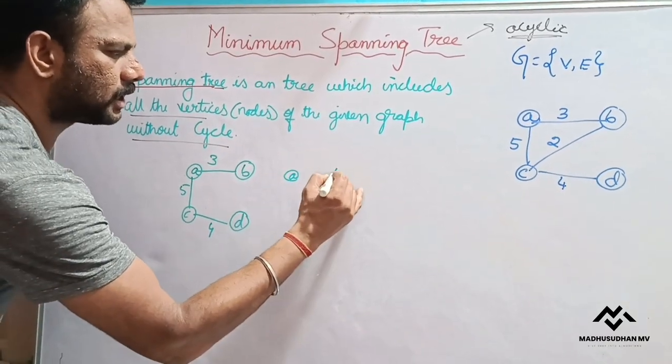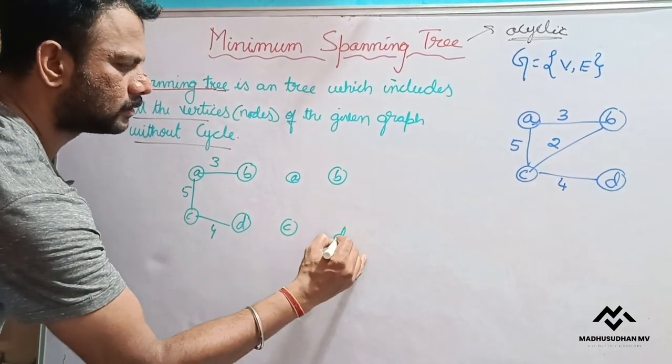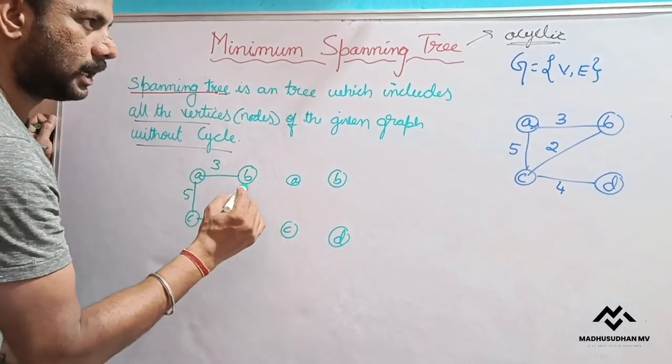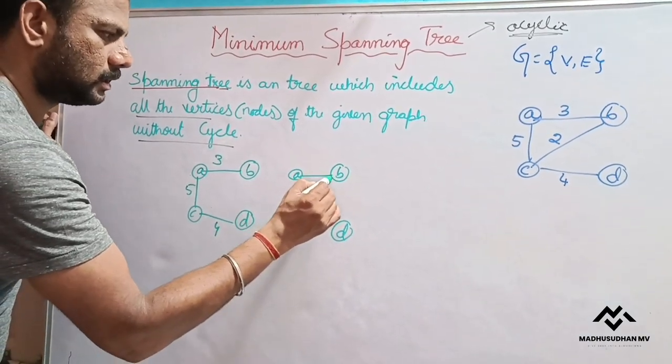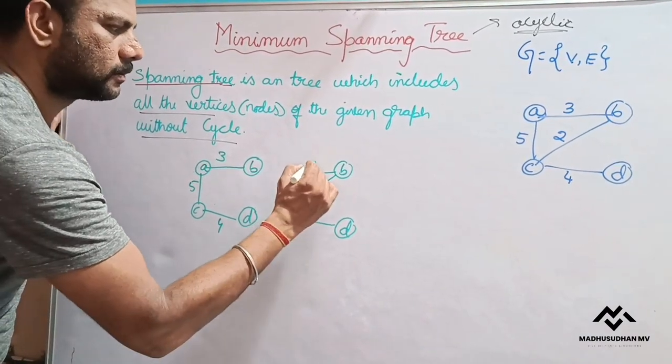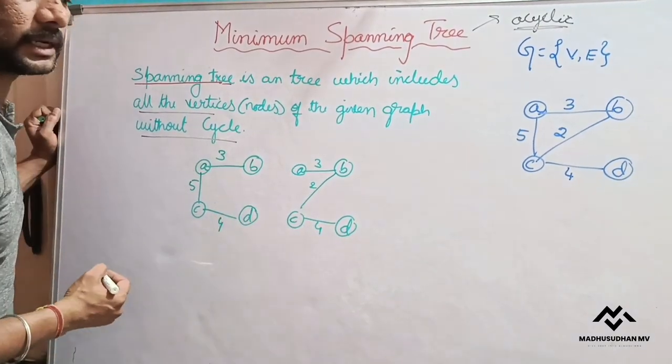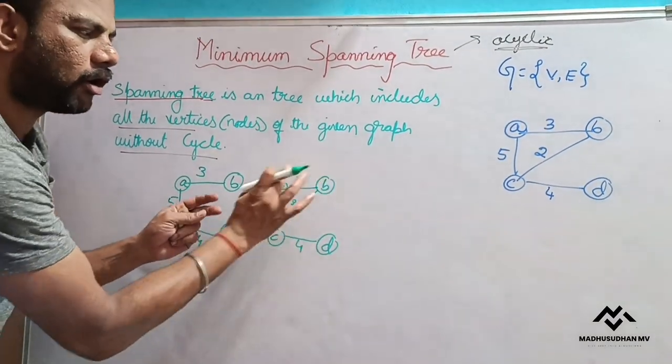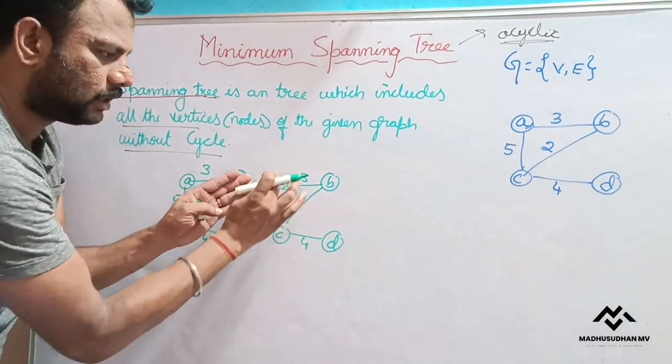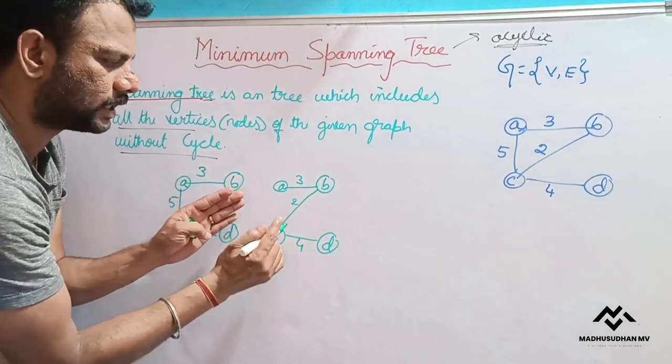Similarly, another possibility, so now this one. So now this is another option. So that means now again, we include all, this is also one spanning tree. We include all the vertices, there is no cycle.